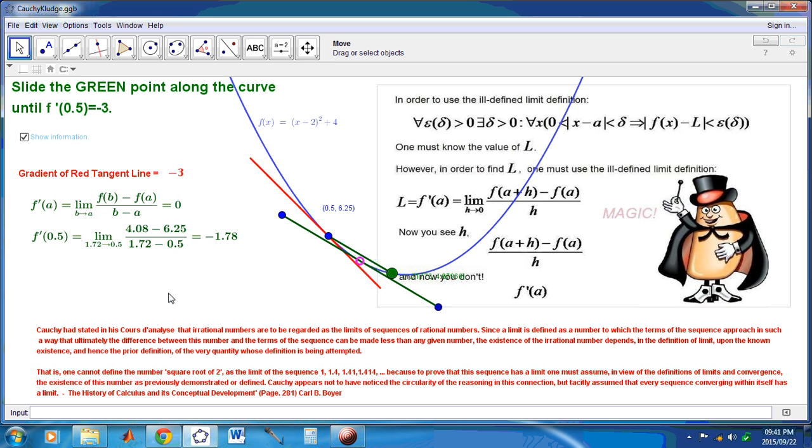Well, Cauchy had stated in his Cours d'Analyse that irrational numbers are to be regarded as limits of sequences of rational numbers. A famous historian called Carl Boyer showed that this can't possibly be true. Because, well, in order to know the limit, one has to assume that such a limit already exists.